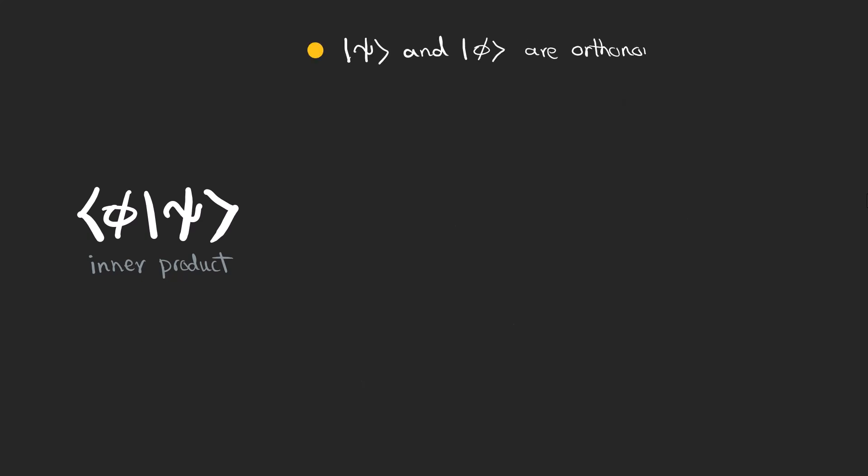Two kets are said to be orthonormal if they are orthogonal and each has a unit norm. Now that you know what an inner product is, it's time to talk about the physical interpretation of the inner product.